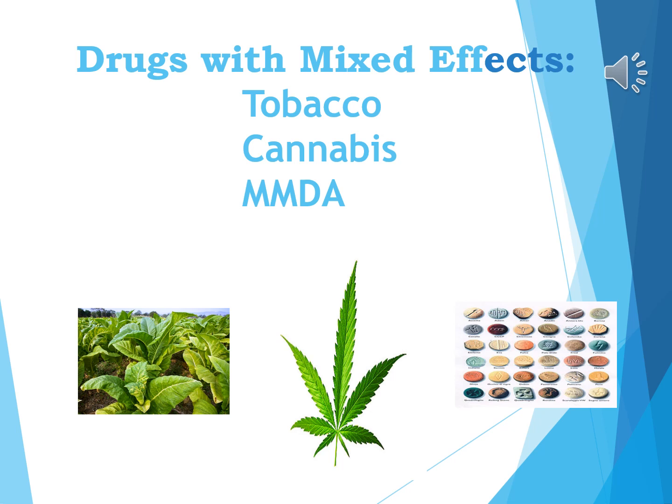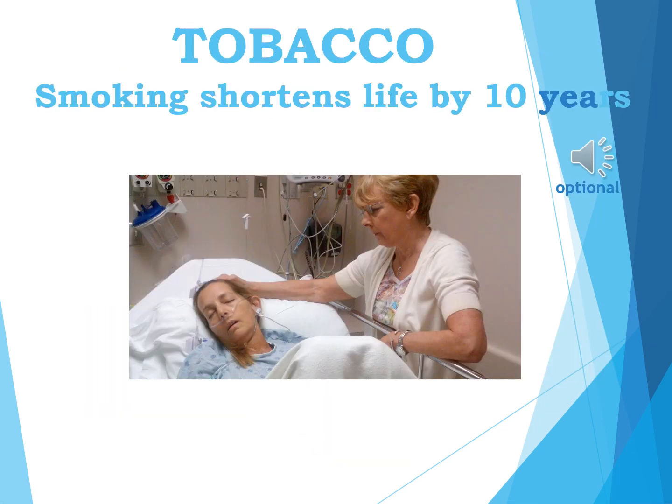The textbook groups cannabis, hallucinogens, and mixed-effects drugs into one category. You can see pictures of tobacco on the left, cannabis in the center, and MDMA (ecstasy) on the right. The use of tobacco products is associated with a greatly shortened lifespan — on average by 10 years — from mouth cancer, throat cancer, lung cancer, emphysema, heart disease, and more.